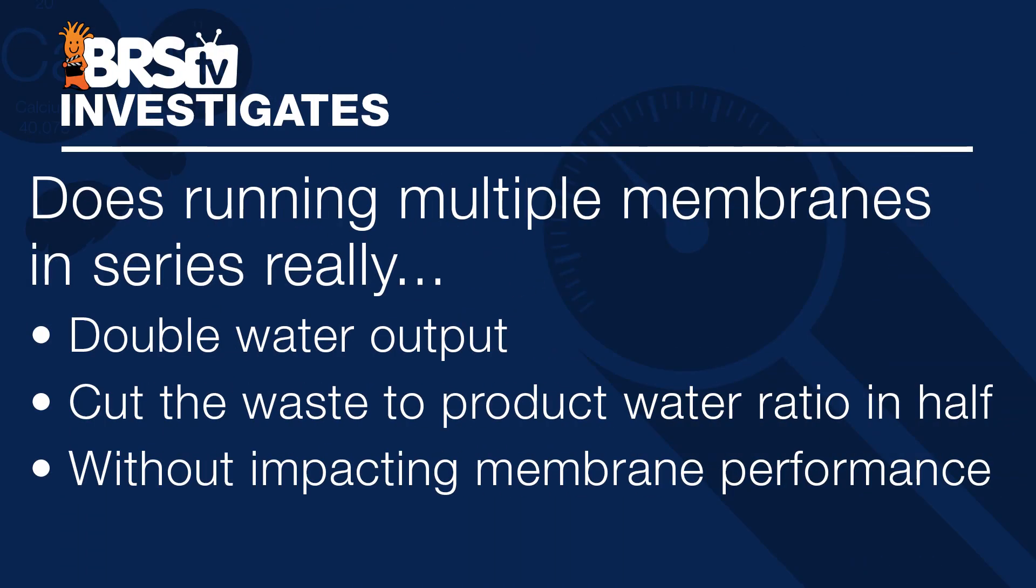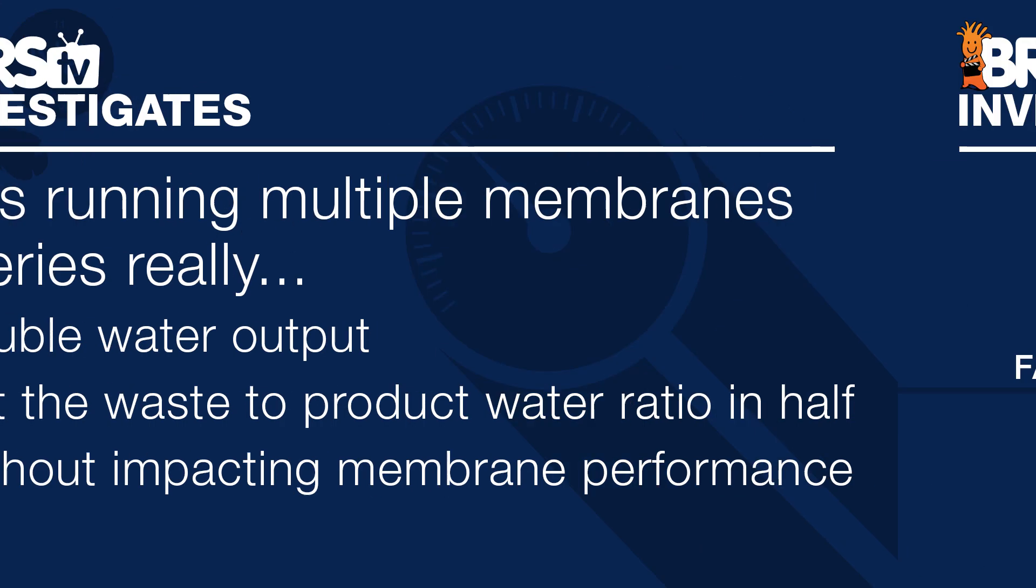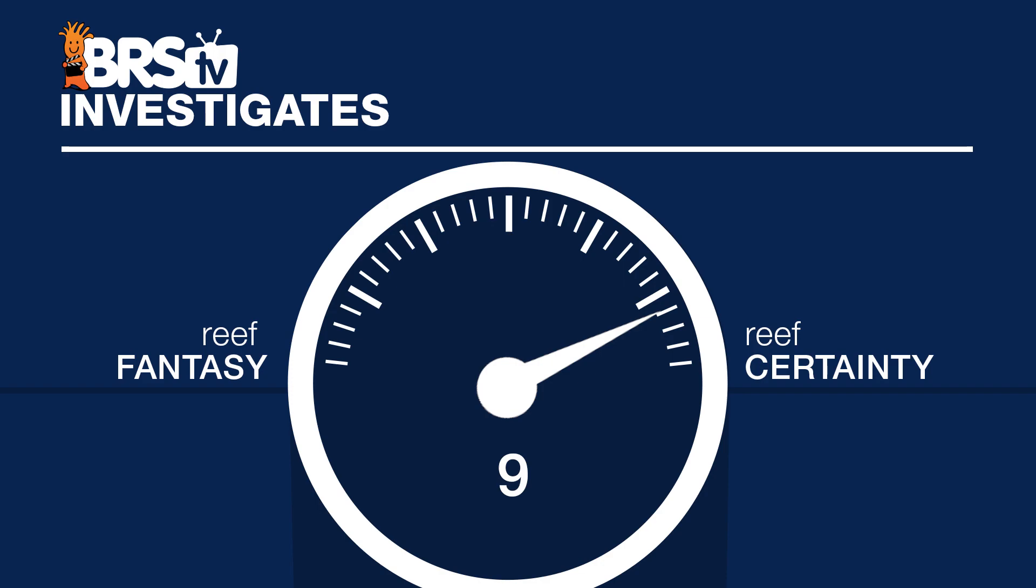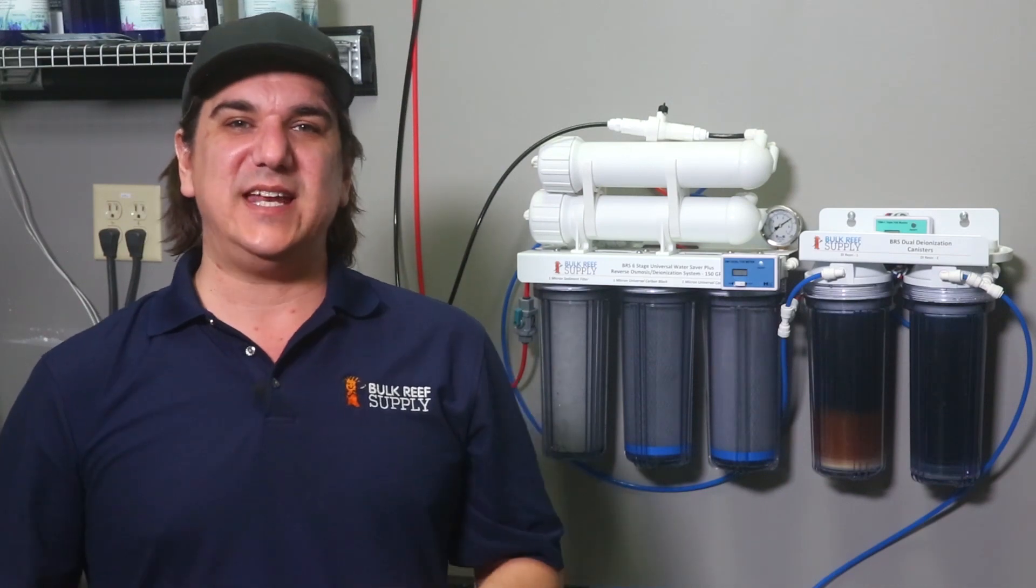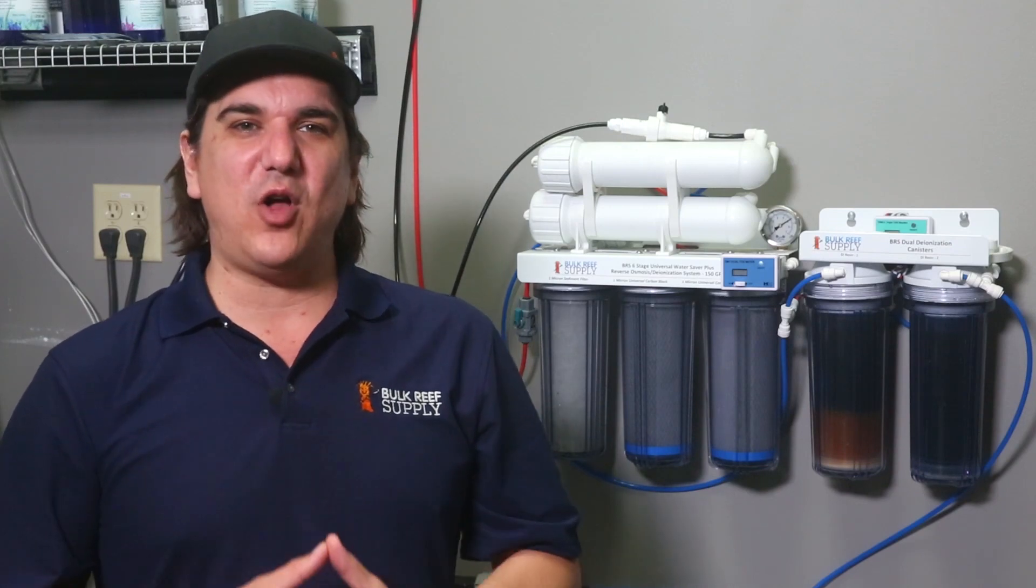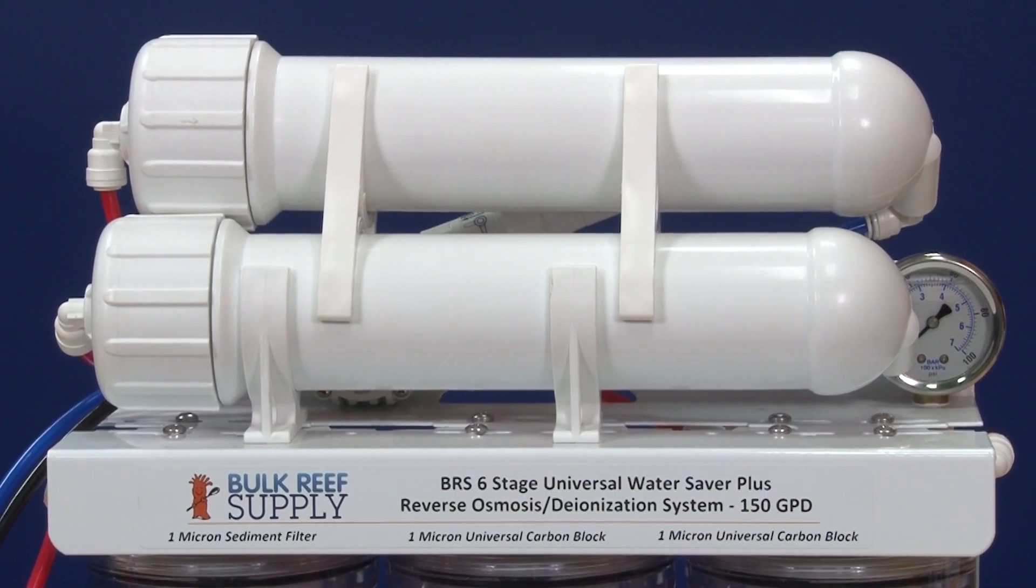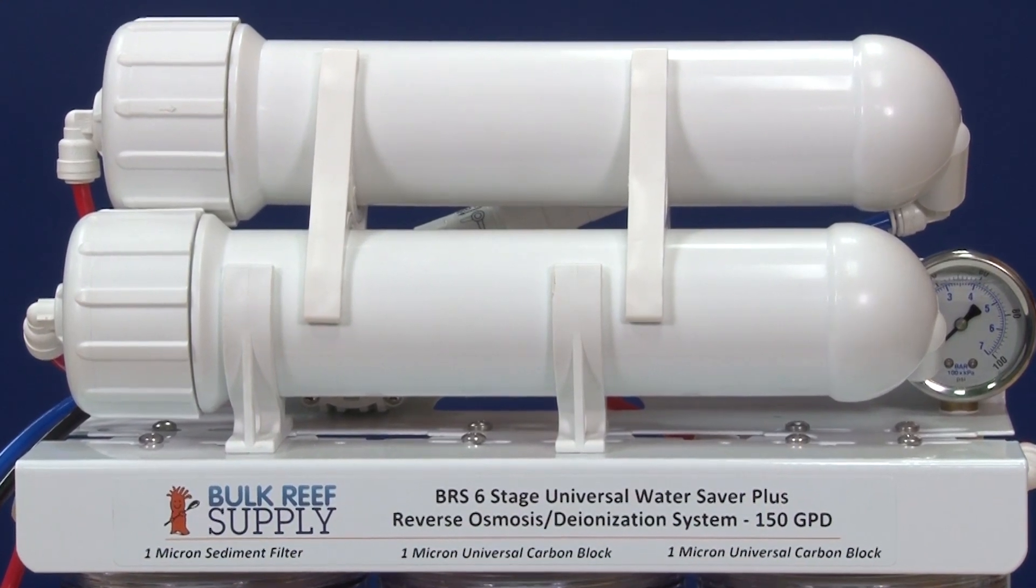I have a few other comments on this, but based on today's results, I am going to rate today's question of do upgrade kits which run multiple membranes in series really double water output and cut the waste to product water ratio in half without significantly impacting membrane performance and longevity a 9, or almost a reef certainty. In this case, we almost doubled the water output and did cut the waste to product water ratio. The TDS increase from the product water was tiny and almost not measurable by most reefers at home, and the overall increase in TDS going into the second membrane was not so high as to indicate that there would be a longevity issue in a significant portion of installs.